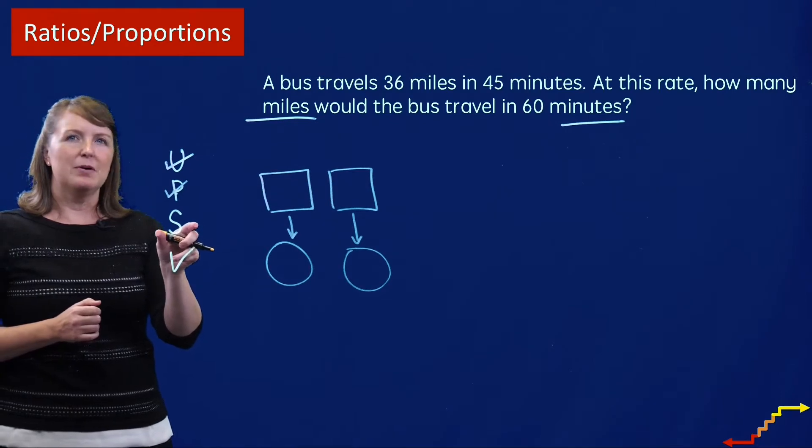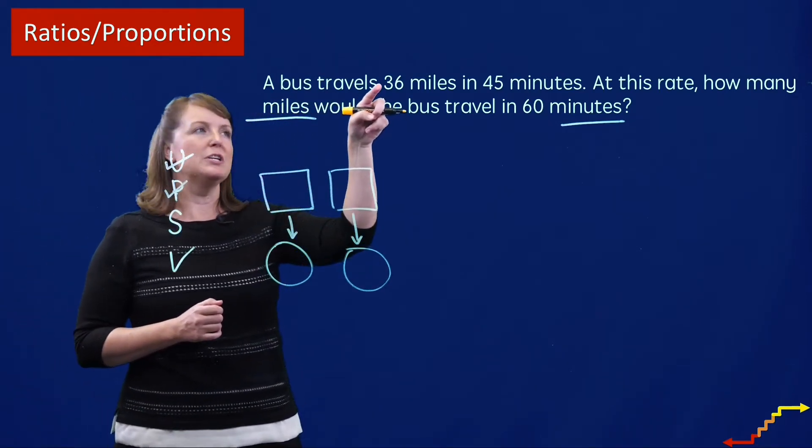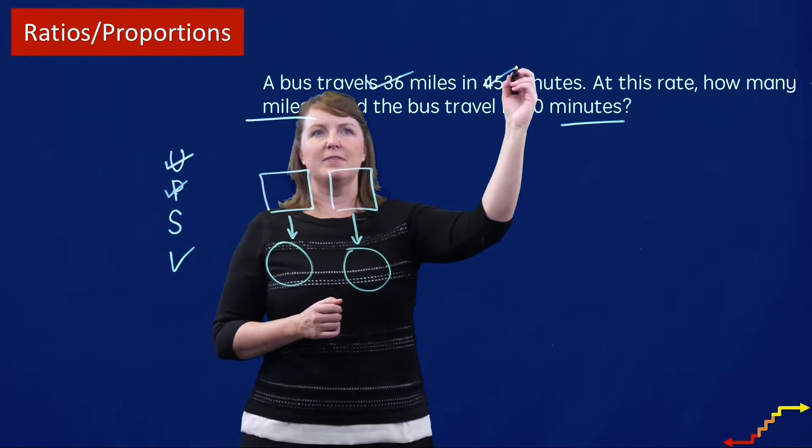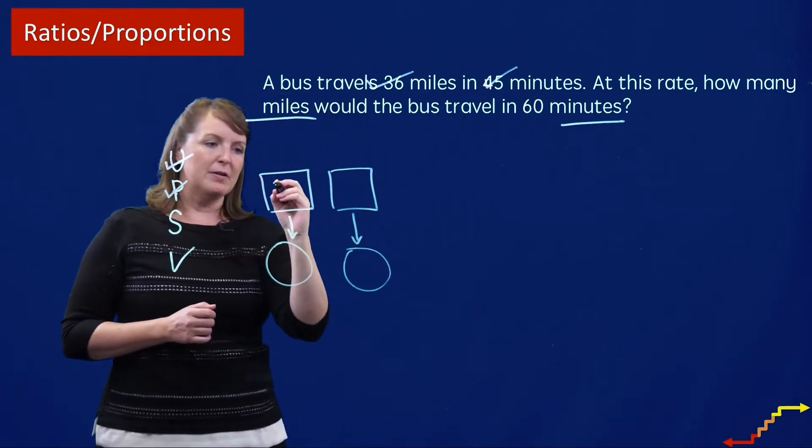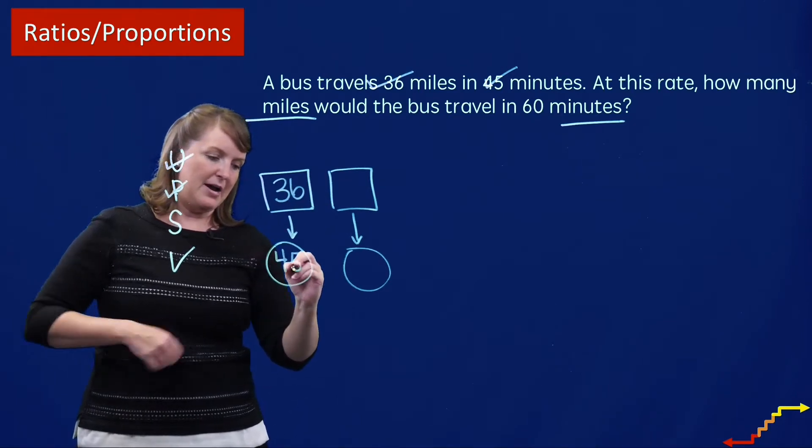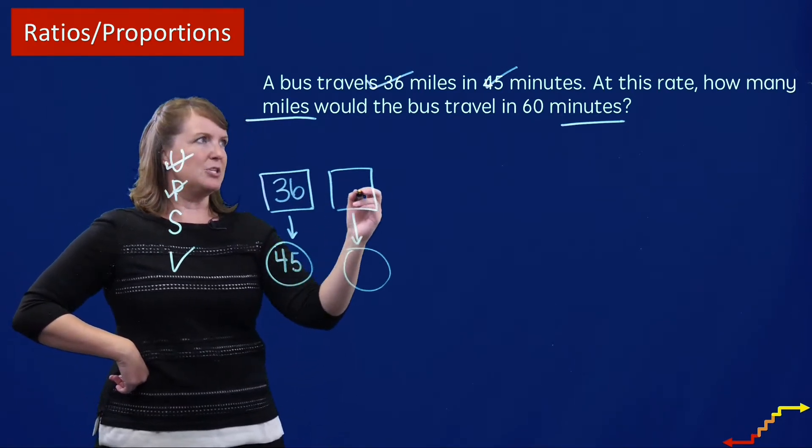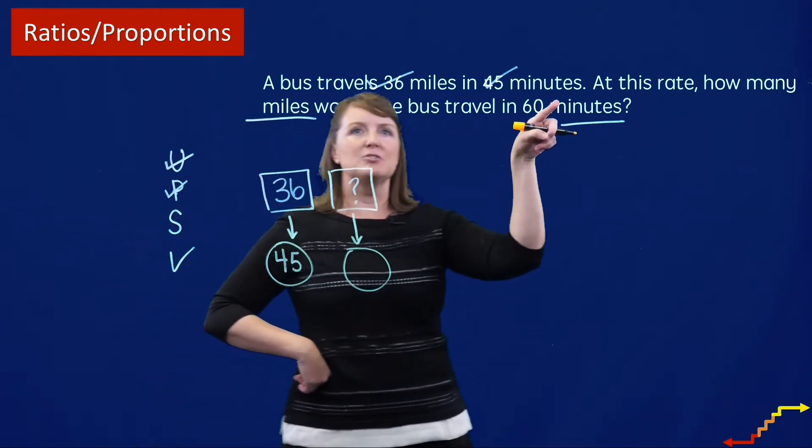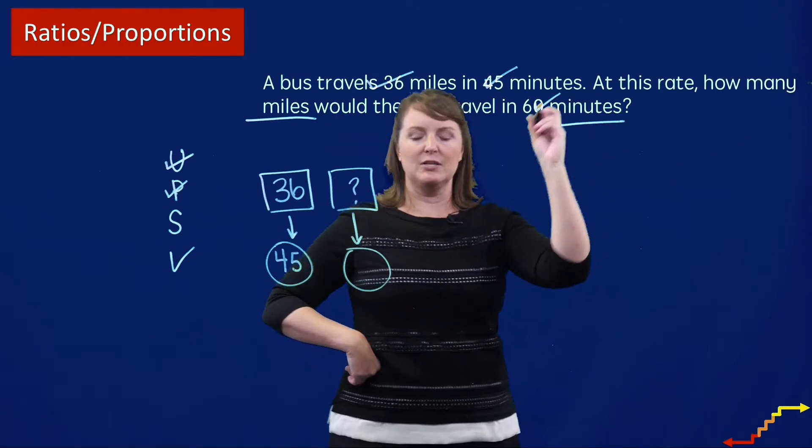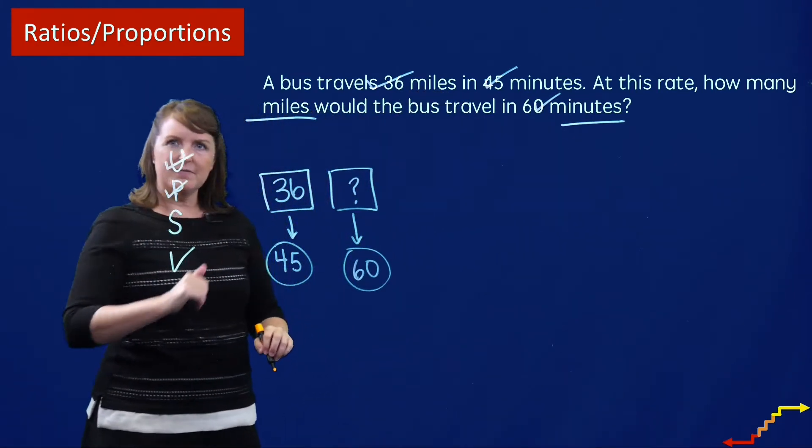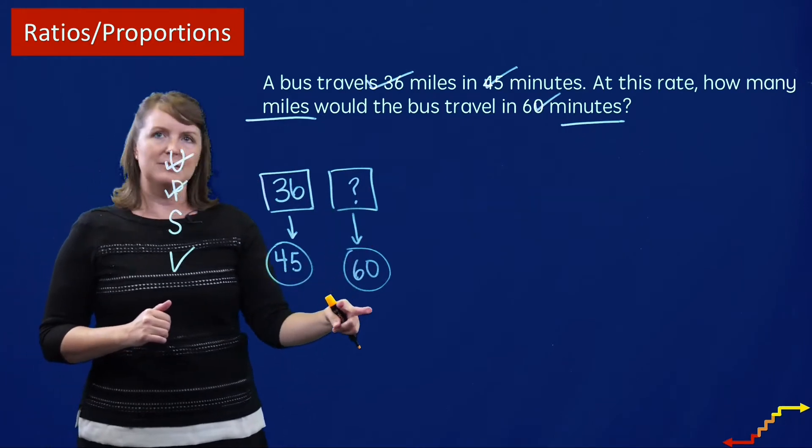Now we're going to solve the problem. So the bus travels 36 miles, so 36 miles in 45 minutes. So if the bus travels 36 miles in 45 minutes, then the question is how many miles, so I don't know that. I'm going to mark that with my question mark, would the bus travel in 60 minutes? So I'm going to check that off so I don't use that number again.